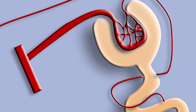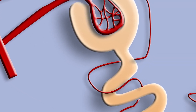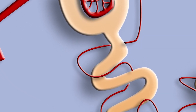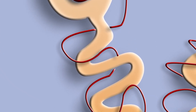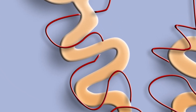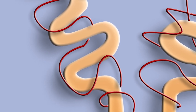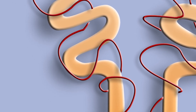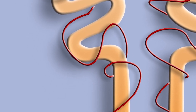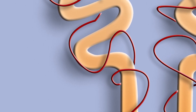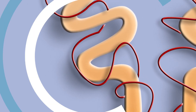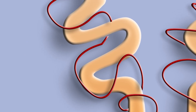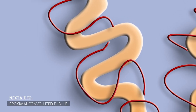Selective reabsorption, which happens as the filtrate flows along the nephron, takes these wanted substances back into the blood. Most of this reabsorption takes place in the proximal convoluted tubule. Let's look at selective reabsorption in the proximal convoluted tubule.